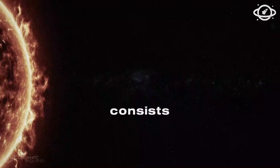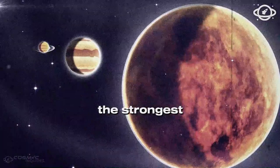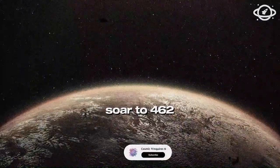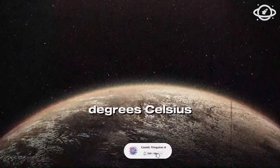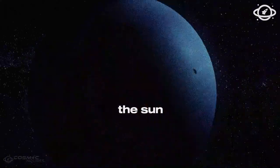The atmosphere consists mainly of carbon dioxide, and the clouds are full of sulfur dioxide, contributing to the strongest greenhouse effect in the solar system. Surface temperatures soar to 462 degrees Celsius on average, making Venus hotter than Mercury, despite being farther from the Sun.